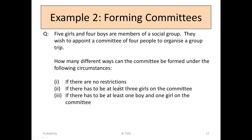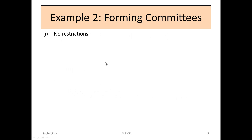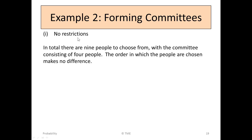In the first case where there are no restrictions, you have 5 girls and 4 boys and you can pick any 4. In total, there are 9 people to choose from, with the committee consisting of 4 people, so you wish to choose 4 from 9. The order in which the people are chosen makes no difference — it doesn't matter whether you pick one girl before another girl, as long as they end up on the committee.